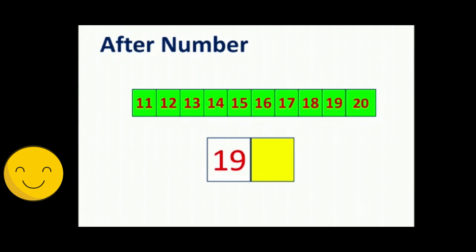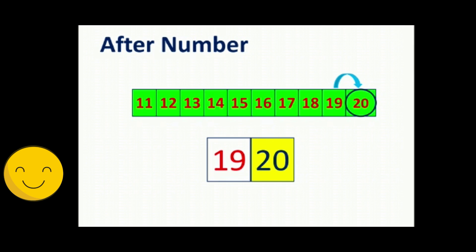And next, 11 to 20 numbers. Look at the numbers: 11, 12, 13, 14, 15, 16, 17, 18, 19, 20. What comes just after 19? 11, 12, 13, 14, 15, 16, 17, 18, 19 — 19 after? 20. Oh, super! This is after number. 19 after? 20.